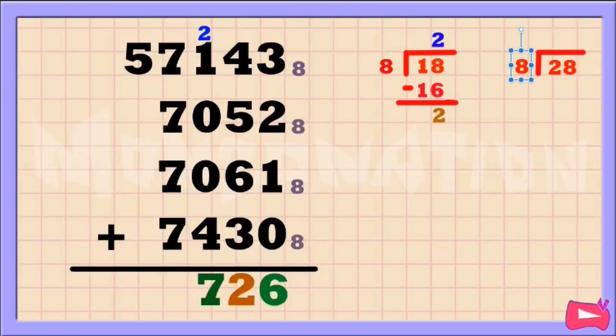So we need to convert it into octal. 28 divided by 8 is 3. 3 times 8 is 24. 28 minus 24 is 4. Let's put the remainder in our sum and the quotient is our carry.